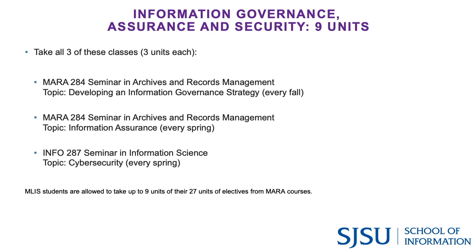With the information governance assurance and security option, you would take all three of the classes listed: two from the MARA program — developing an information governance strategy and information assurance. The course numbers will be changing in the future to MARA 286 and 287. The third class from this series would be Cybersecurity, Info 287. MLIS students are allowed to take up to nine units of their 27 units from the MARA program.